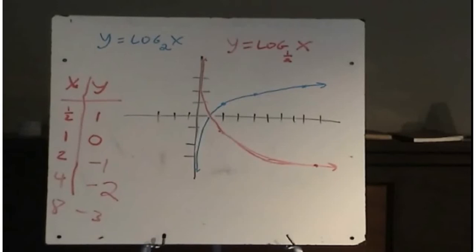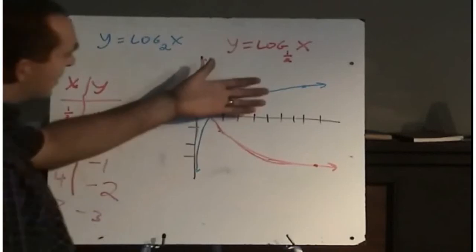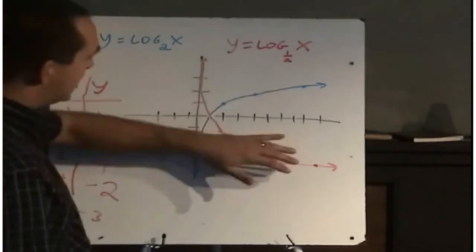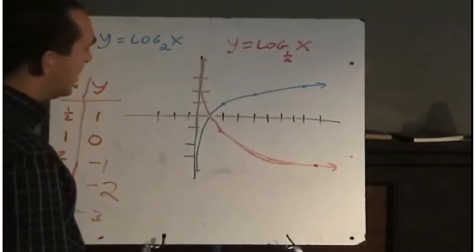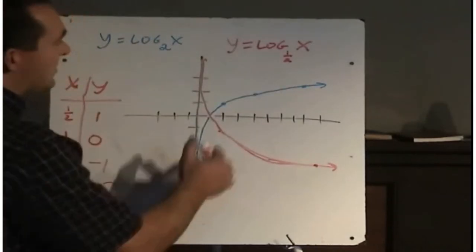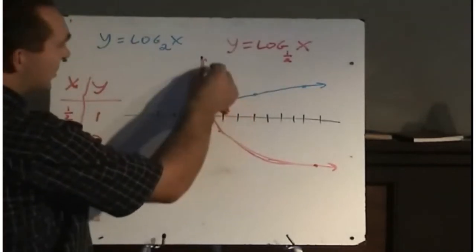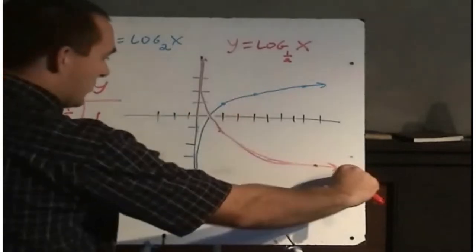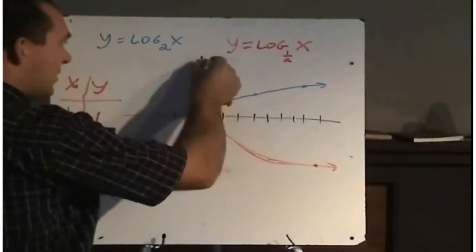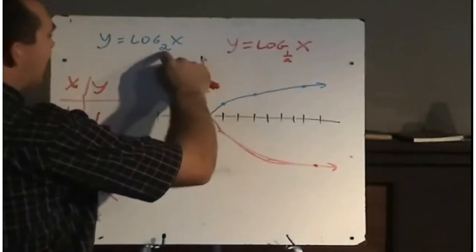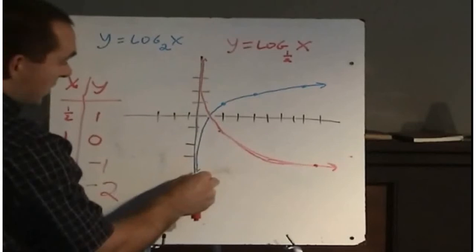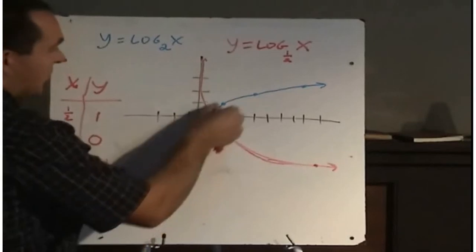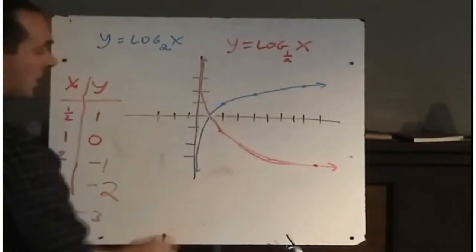So the graph does look different as soon as the base becomes smaller than 1. Basically, what we get is a reflection of the graph in the x-axis. So if the base is between 0 and 1, we get curves that go this way, and if the base of the logarithm is more than 1, we get curves that head this way.